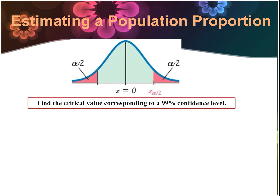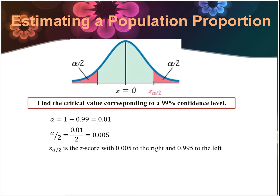The critical value corresponding to a 99% confidence level: 99% of our values appear in the green, meaning 1% appears on the far right and far left red sections — half a percent on each side. Z sub alpha over 2, or z sub 0.005, we're looking for 0.995 to the left, and we find a z-value of 2.575.